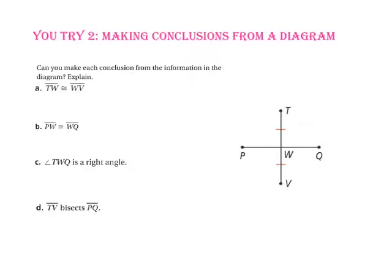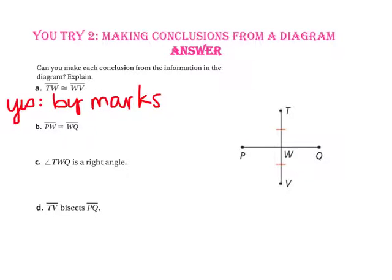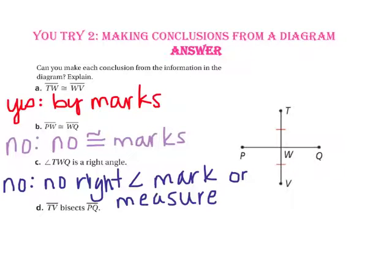Pause the video and do You Try number 2. In part A, we have congruency marks on both segments TW and WV, so yes we can conclude they are congruent. In part B, since there are no marks, we cannot conclude segment PW is congruent to segment WQ. In part C, without a right angle indicator or number, we cannot assume angle TWQ is a right angle. In part D, since we do not know if PW is congruent to WQ, we cannot conclude that segment TW bisects segment PQ.